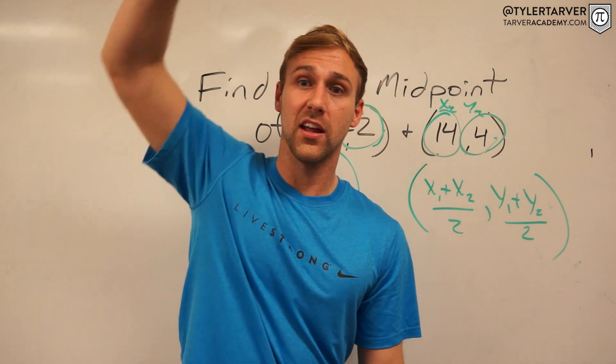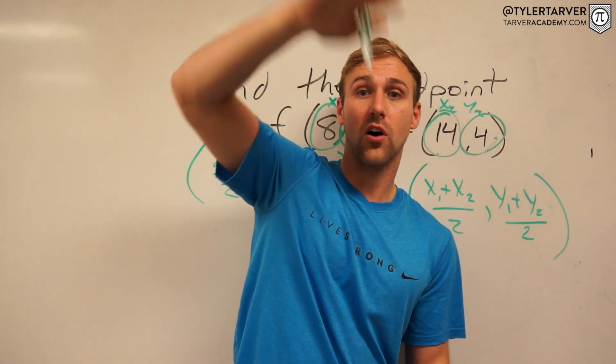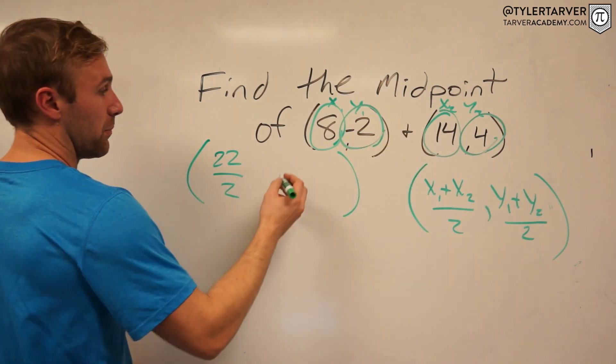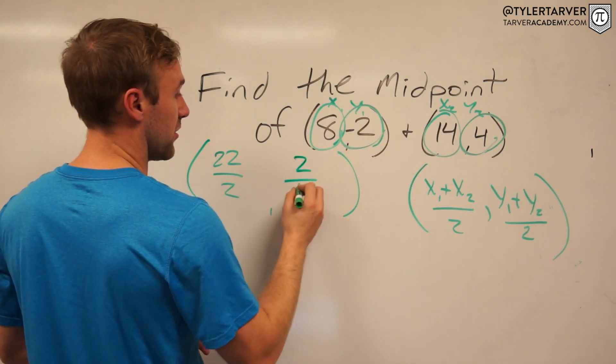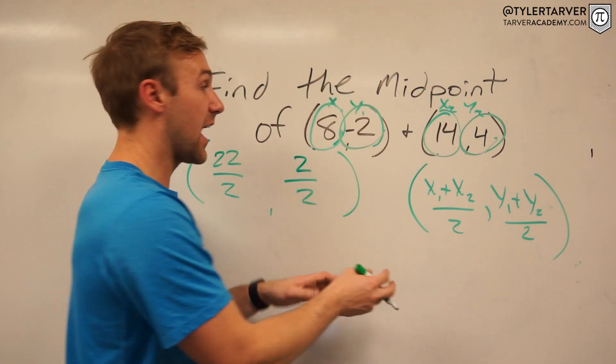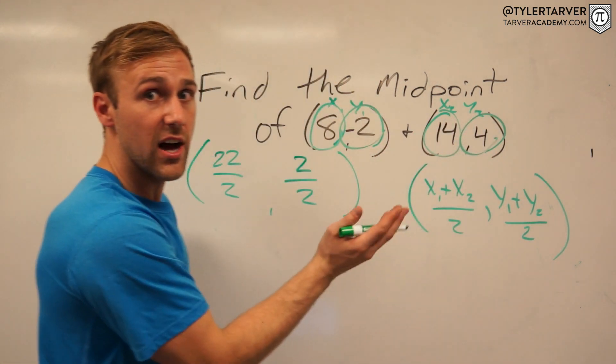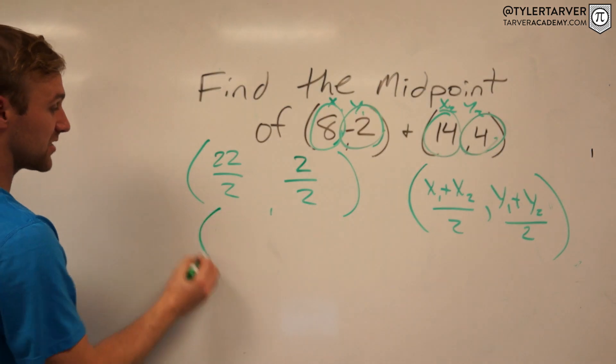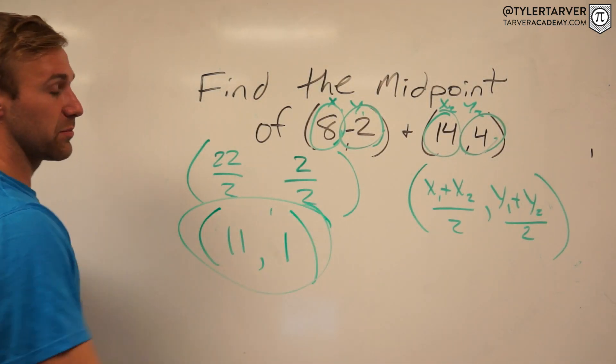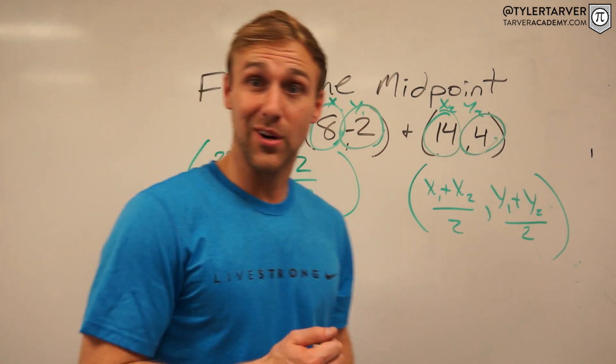But if you know in your head you got a negative 2 and you got a 4, it's like digging 2 feet under and then putting a stick in there that's 4 feet tall. How much above that is it going to be? 2. Negative 2 plus 4 is positive 2. We divide that by 2. So you're going to add your x's together, then cut it in half. Add your y's together, cut it in half. 22 divided by 2 is 11, 2 divided by 2 is 1.